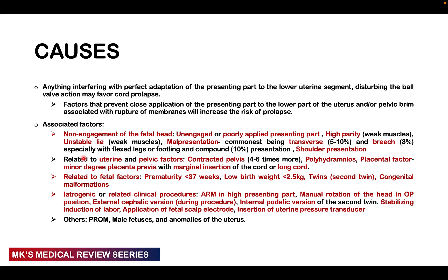The second group of associated factors relates to uterine and pelvic factors: a contracted pelvis (4 to 6 times more common), polyhydramnios especially with rupture of membranes, placental factors such as minor degrees of placenta previa with marginal separation of the cord, or a long cord. Fetal factors include prematurity (less than 37 weeks), low birth weight (less than 2.5 kg), twins especially with the second twin, and congenital malformations.